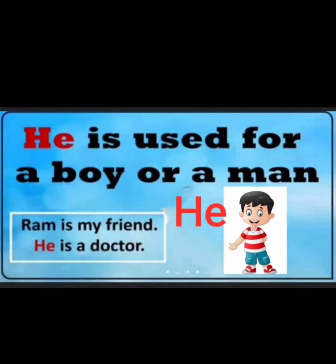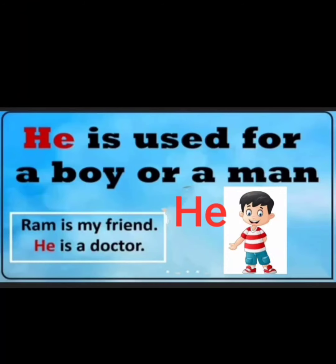'He' is used for a boy or a man. So Ram is my friend. He is a doctor. So in place of Ram, we used 'he'. He is used in place of a boy or a man.